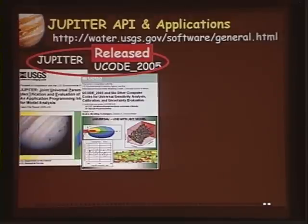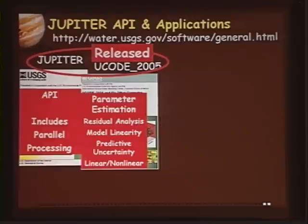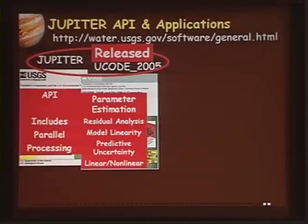The USGS mounts anything that has a USGS author involved in it, so they have mounted so far JUPITER and UCODE. The JUPITER API includes modules that will allow you to make parallel processing of multiple computer runs possible — you can quickly just call that module and use a cluster of computers to make the calculations.